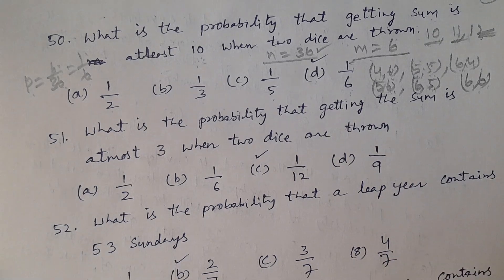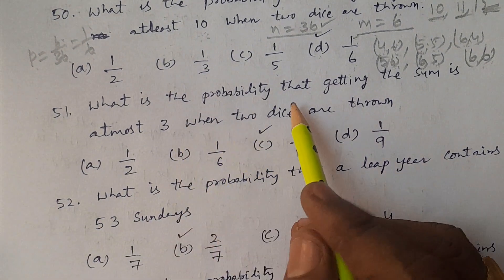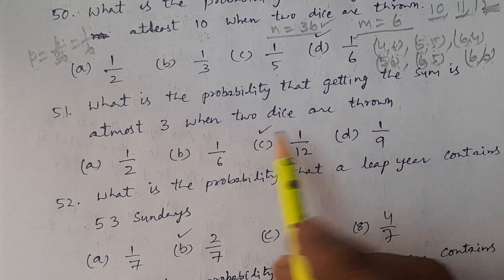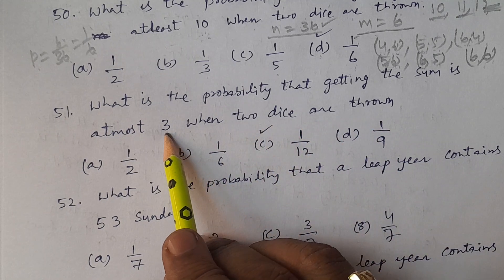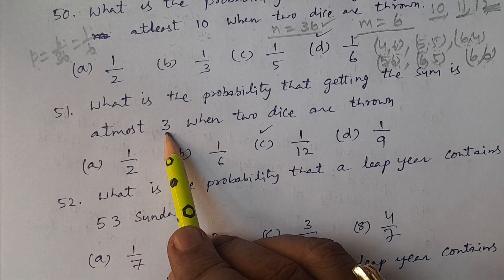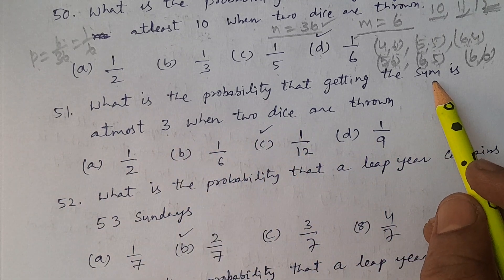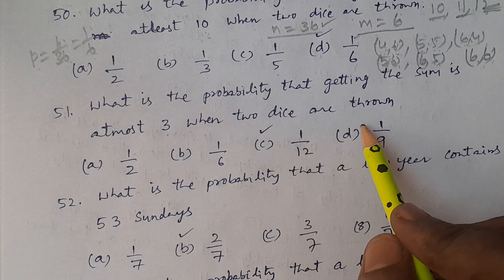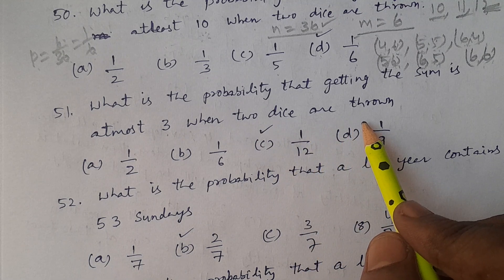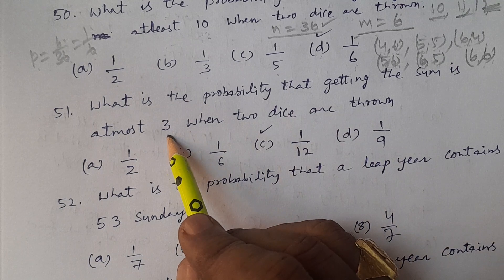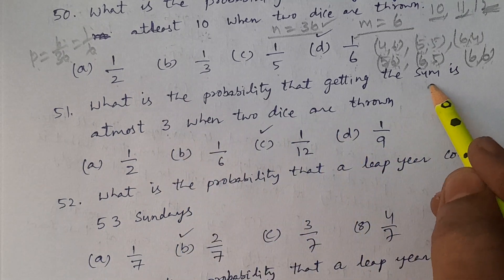Question number 51: What is the probability of getting a sum of at most 3 when two dice are thrown? At most 3 means the sum is maximum 3. The minimum sum when two dice are thrown is 1+1 = 2, so we need to consider sums of 2 and 3.